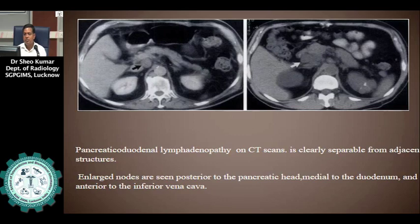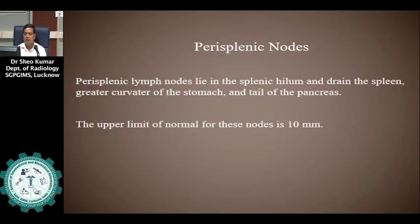Pancreaticoduodenal nodes lie within the duodenal sheet and pancreatic head, anterior to the IVC. Lymphoma, carcinoma of the pancreatic head, colon, stomach, lung, and breast are common malignant processes to involve these pancreaticoduodenal lymph nodes. CT scan images show a lymph node on the right side, and on the left side multiple lymph nodes clearly separated from the IVC and aorta.